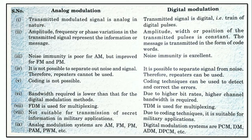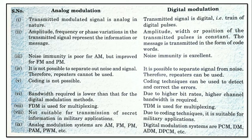In digital modulation, TDM — time division multiplexing — is used. Analog modulation is not suitable for transmission of secret information in military applications, whereas in digital modulation, due to coding techniques, it is suitable for military applications. Analog modulation systems include AM, FM, PM, and PWM, while digital modulation systems include PCM, DM, ADM, and DPCM.